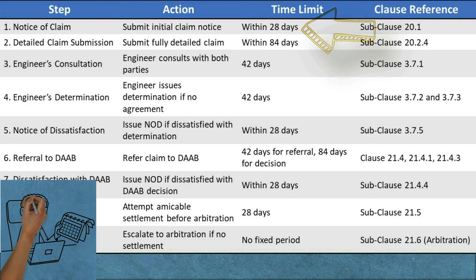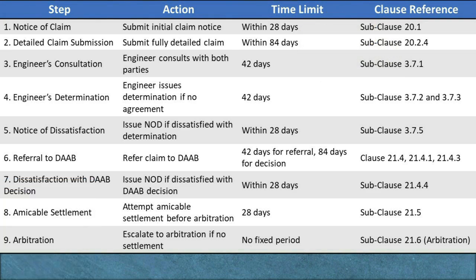Time limit: The notice of claim must be submitted within 28 days of the contractor becoming aware, or when they should have reasonably become aware, of the event or circumstance causing the claim. Clause reference: Subclause 20.1 — Claims. Purpose: This initial 28-day notification period is intended to ensure that claims are raised promptly, allowing the engineer and the employer the opportunity to investigate and take any necessary steps to mitigate the effects of the event or circumstance causing the claim.